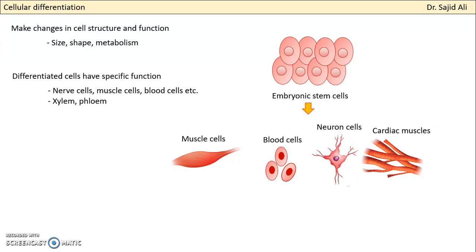To sum up: during cellular differentiation, changes occur in size, shape, and metabolism. The final objective is a cell with a specialized shape and function, which is part of an organ or a system. This is called cellular differentiation. Students can re-listen to this and then we can discuss it through our WhatsApp group.